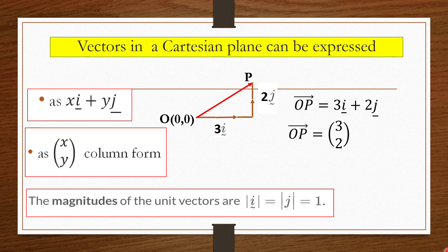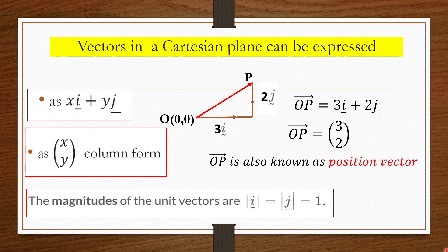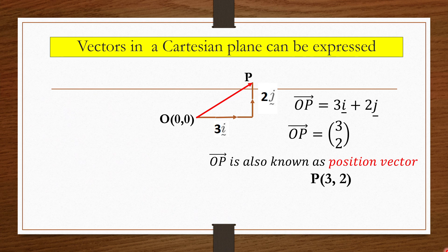Using column form, OP is written as (3, 2). Vector OP is known as a position vector — a vector that originates from the origin. For example, OQ is the position vector for coordinate Q. From vector OP equals 3i plus 2j, coordinate P is (3, 2).